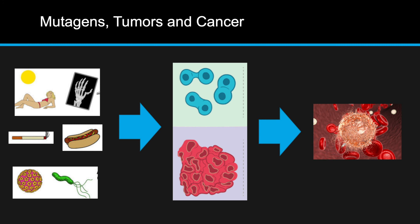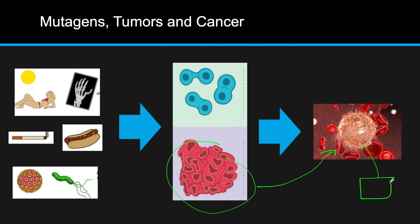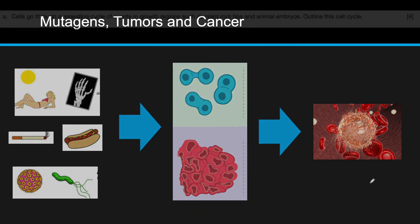Once a tumor starts to form, it is called the primary tumor. If it spreads through the circulatory system and travels to other places — say it started in the liver and then implants in the stomach wall — that would be known as a secondary tumor.